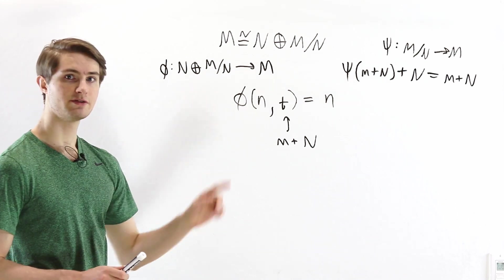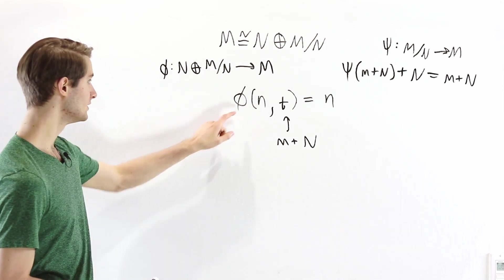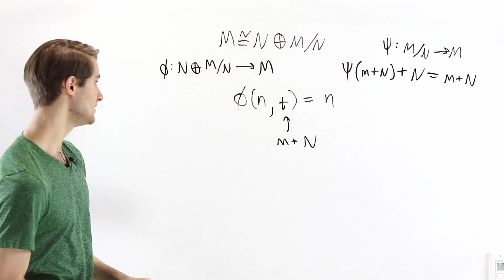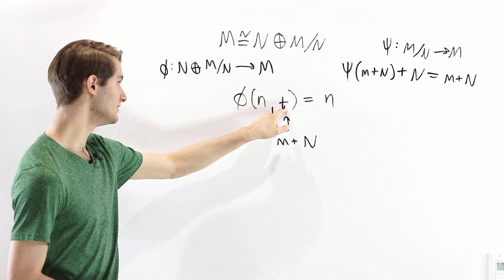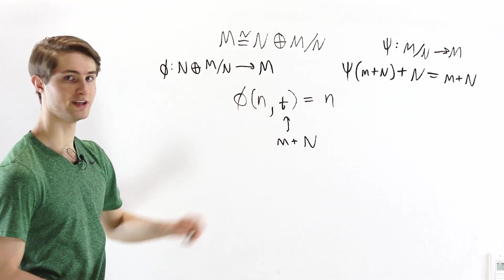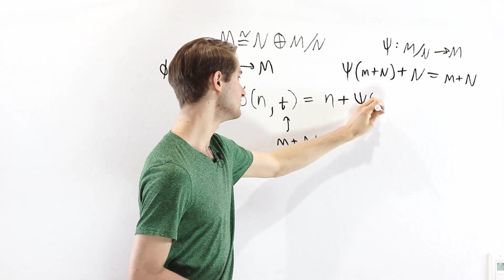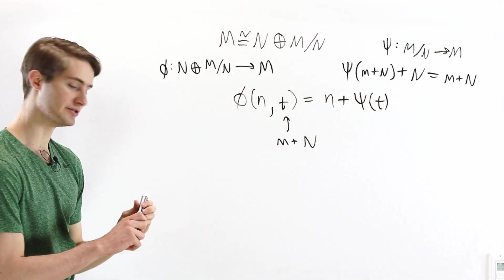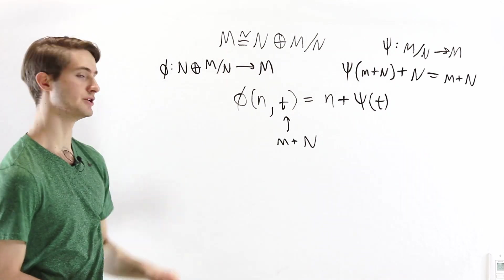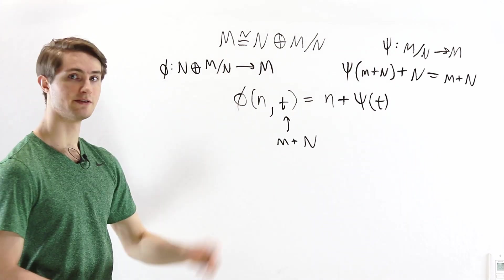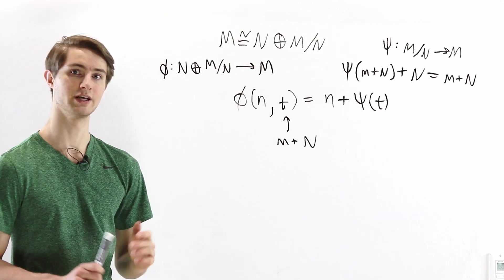Now that we have our function ψ to give us a coset representative for every coset, we can finish defining our map φ. We know that n is going to get sent to n. And then t, which is a coset in the quotient module, we can send to ψ(t), which takes the coset and picks a specific representative in the original module. So now we have our map and we need to check that φ is an isomorphism.